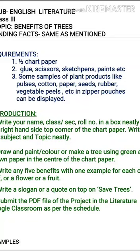Remember to make a nice big tree in the center of the chart paper. You have to write any five benefits of trees and give one example for each. The examples have to be written on a leaf, a flower, or a fruit shape. You also have to write a slogan — the slogan should be about saving trees.